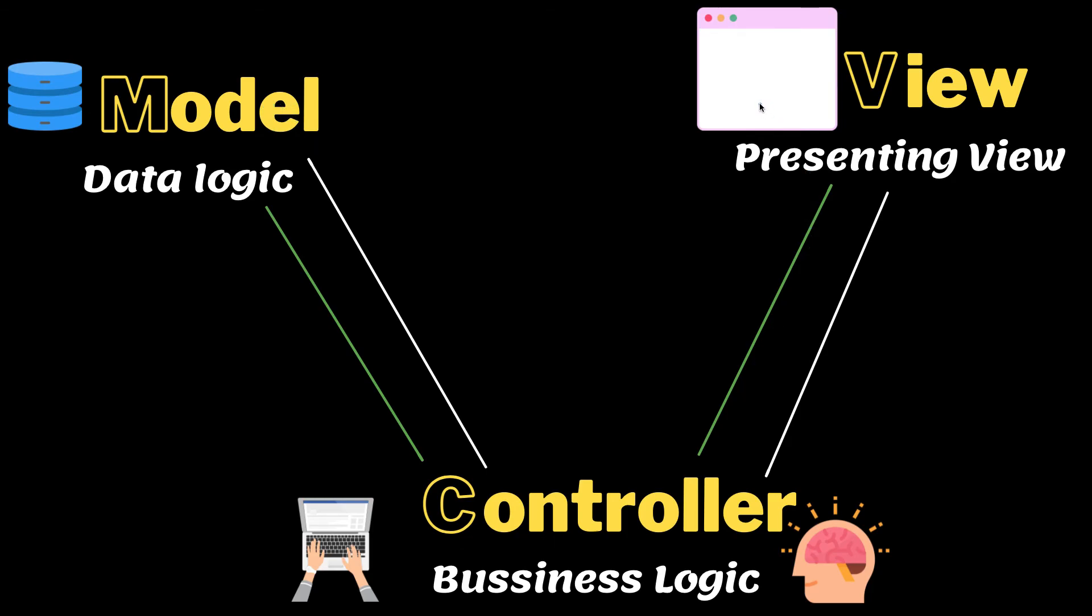The View just takes the response from the Controller and displays it. The Controller takes the data logic from the Model, makes some logic, and displays to the user. Always, Model and Controller talk back and forth, but Model cannot talk directly to the View unless Controller gives a response—whether success or failure. Now that you understand how this works, in the next video we are going to start creating our first model.